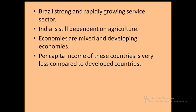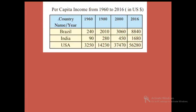What is per capita income? It means income per person. In the table you can see the per capita income from 1960 to 2016, in US dollars, comparing Brazil, India and USA. Brazil and India are developing countries but USA is a developed country. You will notice that in all the years mentioned, the per capita income of USA was always higher, and compared to India, the per capita income of Brazil was also high.